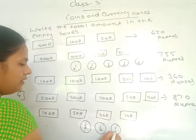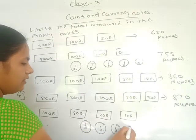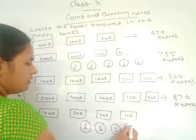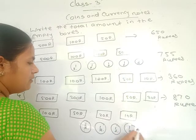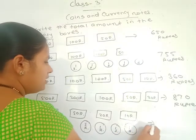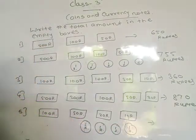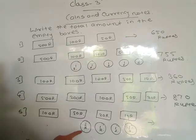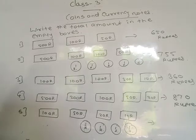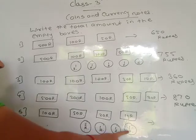One 2 rupees coin and one 1 rupee coin and another 1 rupee coin. How many coins? 4 coins, but here one is a 2 rupees coin, so total here is 5 rupees.